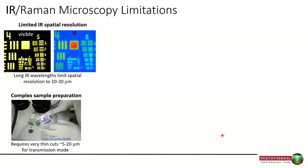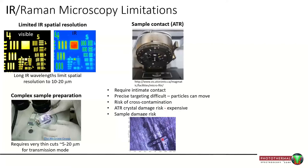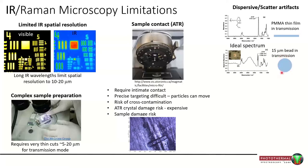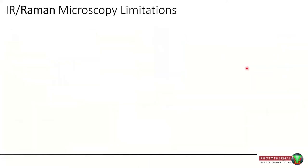Sample preparation is also complex — the best spectra are obtained with thin cuts, typically 5 to 20 microns, which can be very difficult. Some of those issues are mitigated with ATR, but that requires direct intimate contact and can be difficult to target, with risk of cross-contamination. One under-appreciated issue is dispersive scatter artifacts. The same PMMA material collected as a thin film versus on a bead looks very different, making infrared spectra sample shape, size, and surface roughness dependent.